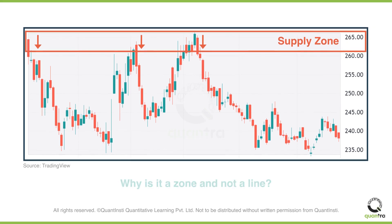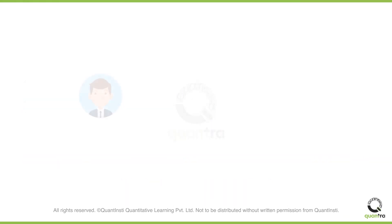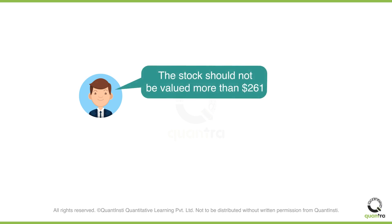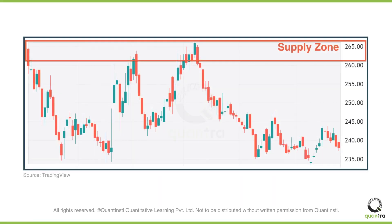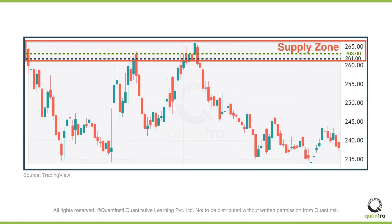You may be wondering, why is it a zone and not a line? Let's understand this with an example. Assume trader A thinks that the particular stock is fairly valued at $261, and above this price it is overvalued. Whereas trader B thinks the price of the stock should not be more than $263. Therefore, both traders will sell at different price levels. This implies that when prices are reversing, they may not reverse at the same price level. They will reverse somewhere close to the price level which seems overvalued to the majority of market participants, which leads to the formation of a supply zone.